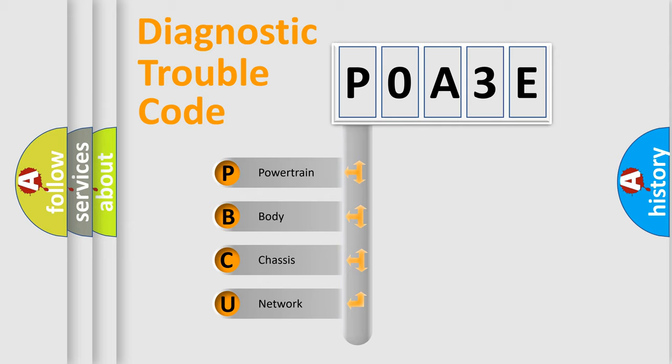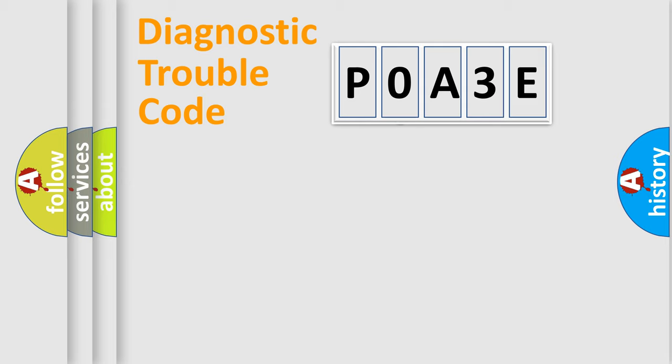We divide the electric system of automobile into four basic units: Powertrain, Body, Chassis, Network. This distribution is defined in the first character code.